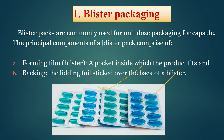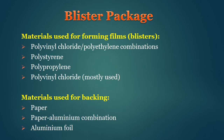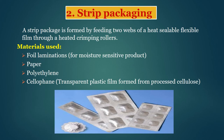Toh yeh hai aapki blister packaging. Blister packaging mein materials kaunse use karte hain? Usme polyvinyl chloride, polystyrene, polypropylene ka use karte hain. Isme hum paper, paper-aluminium combination aur aluminium foil ka bhi use karte hain. Is picture mein jo packaging hai, isko hum strip packaging kehte hain. Isme hum jo material use karte hain: foil lamination, paper, polyethylene and cellophane ka use karte hain.